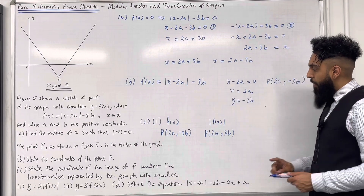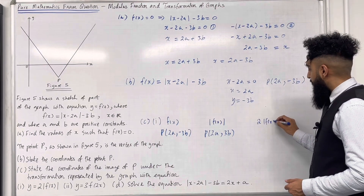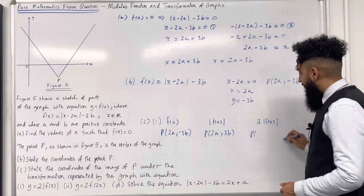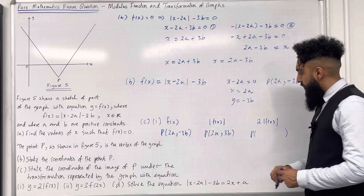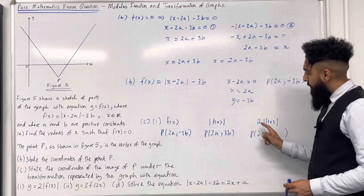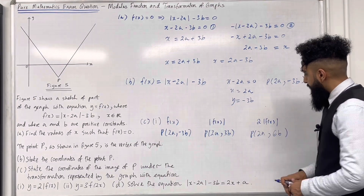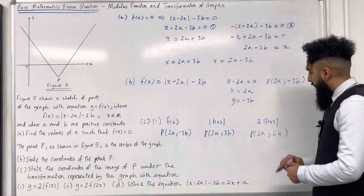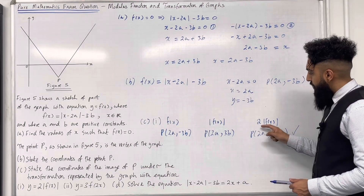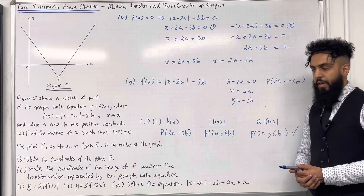Next, applying the transformation 2|f(x)|: we keep the x-coordinate the same (2a), and multiply the y-coordinate 3b by 2, giving 6b. So the final image of P under y = 2|f(x)| is (2a, 6b). That completes part 1.